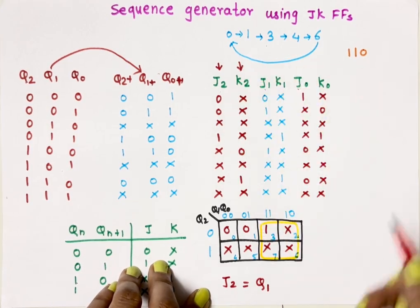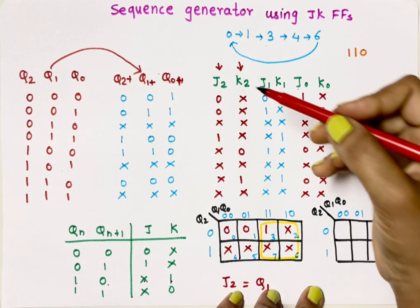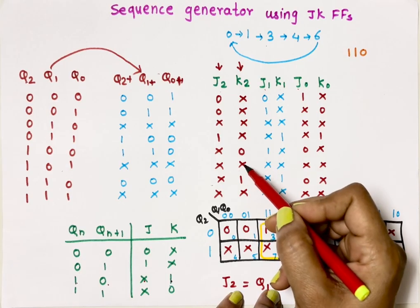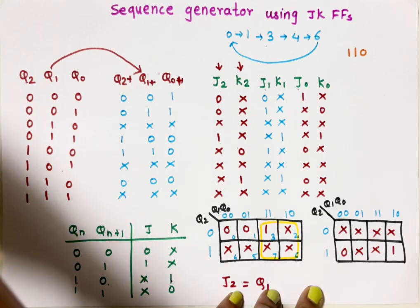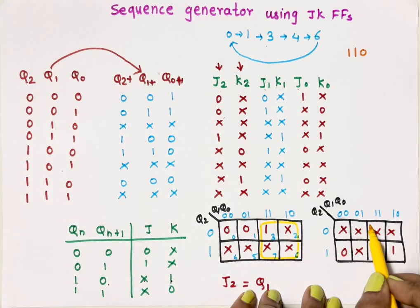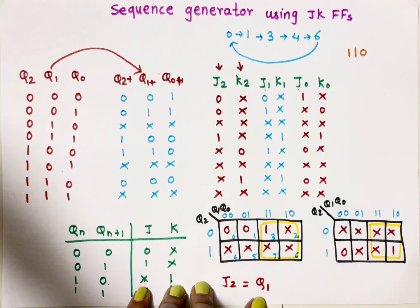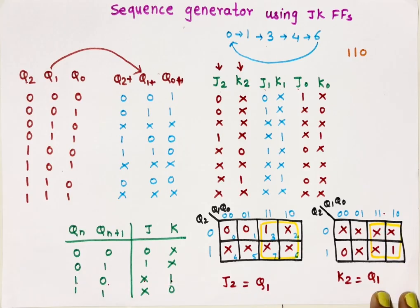Similarly, let's prepare the K-map for K2. The K2 values are: four don't cares in the top cells, then 0, don't care, 1, don't care in the bottom. We can again make a group of the same 4 cells. The equation becomes K2 = Q1. So both J2 and K2 equal Q1.